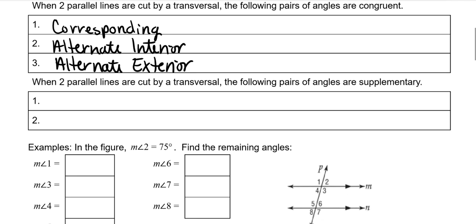And then when two parallel lines are cut by a transversal, the following pairs of angles are supplementary: so either of the consecutives — consecutive interior angles and consecutive exterior.